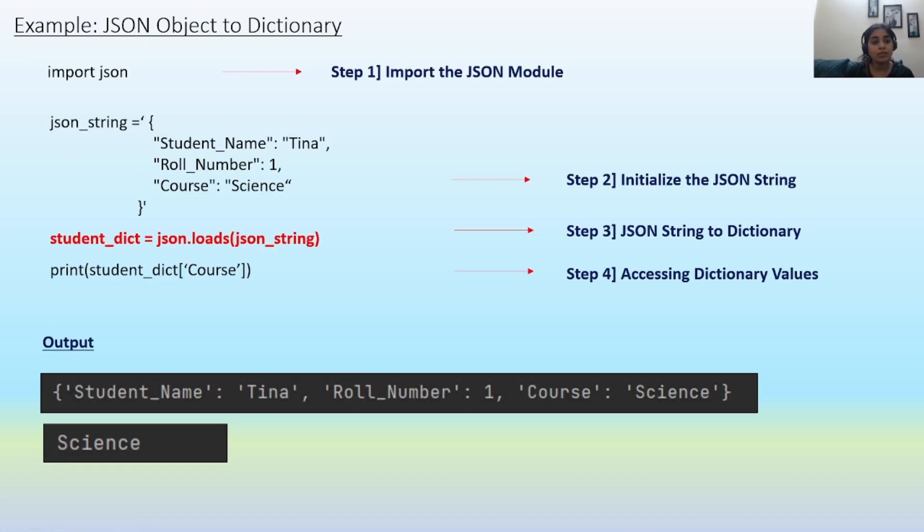Now let's have a look at the example of conversion of JSON object to dictionary. Here are the four steps we need to follow. First, we have to import the JSON module by using the command import json. Second step is to initialize a JSON string.